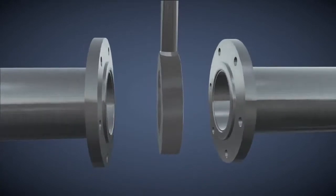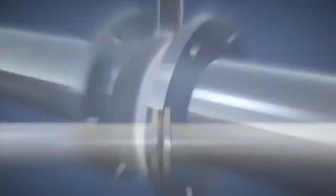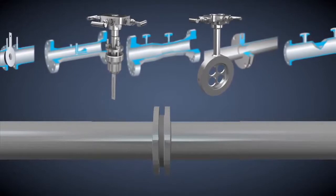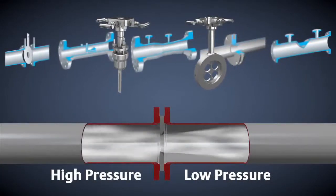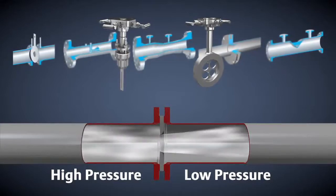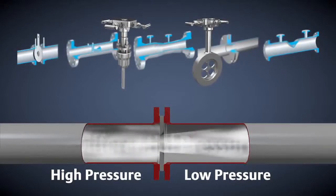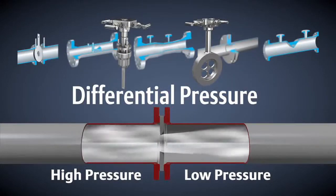Primary element selection is dependent on process conditions. All of these different primary elements have one thing in common. They constrict the flow in a pipe, causing a pressure drop from one side to the other. The difference in pressures is the differential pressure. The square root of DP is proportional to the flow rate.